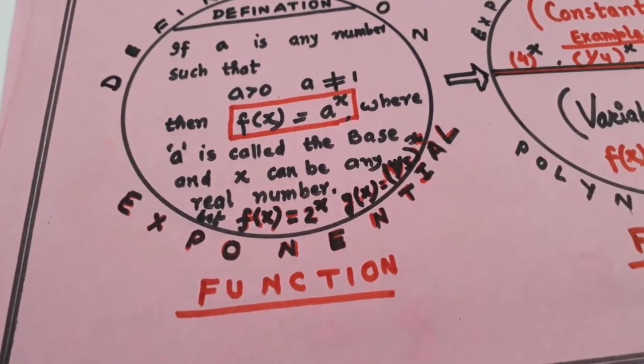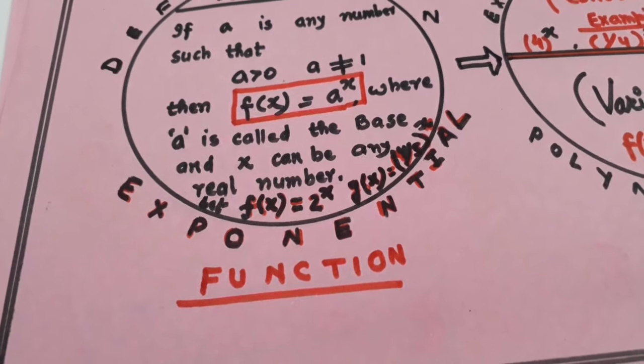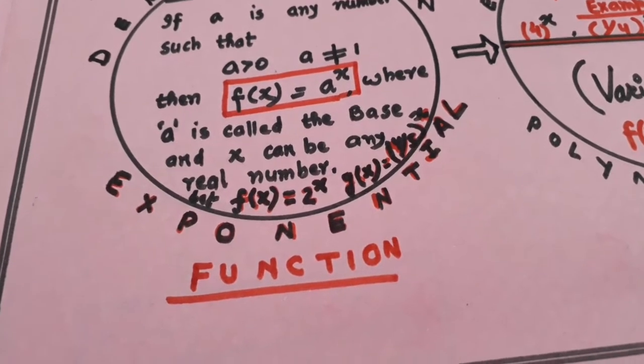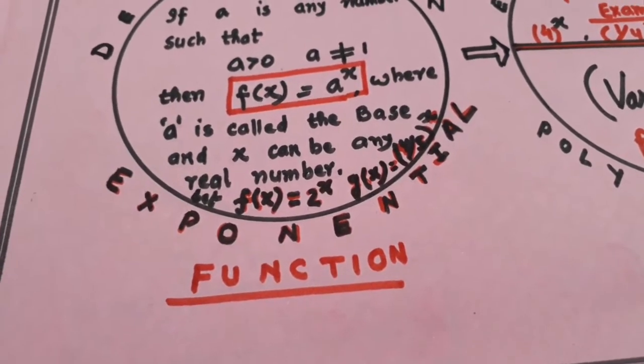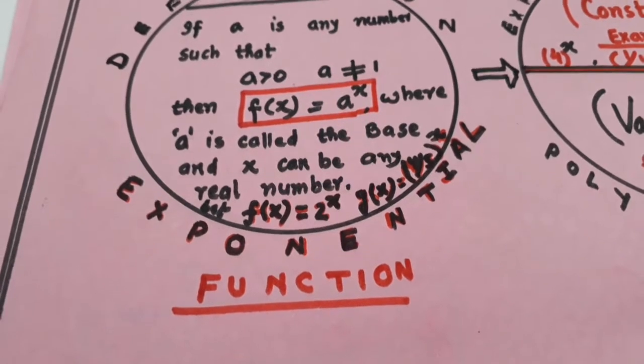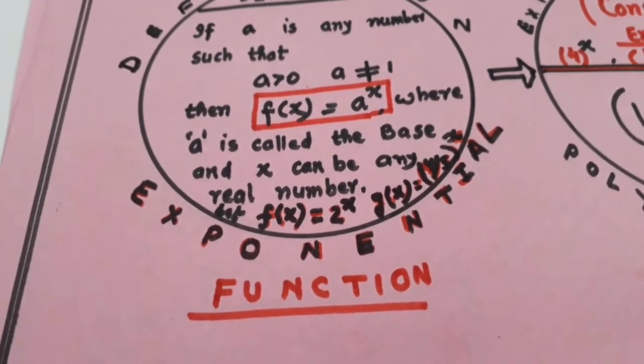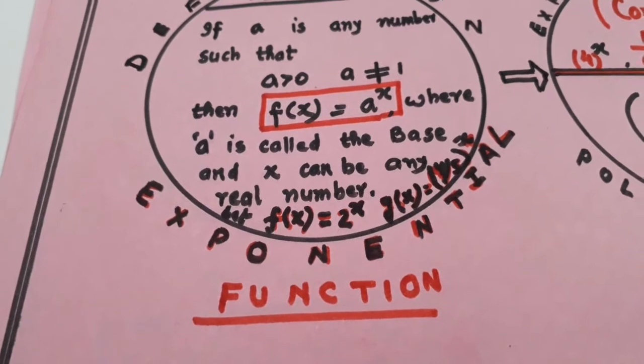So, I have given an example, f(x) is equal to 2 raised to power x or it can be even 1 by 5 raised to power x. Look here, it is satisfying the conditions, two conditions: a should be positive and it should not be equal to 1.